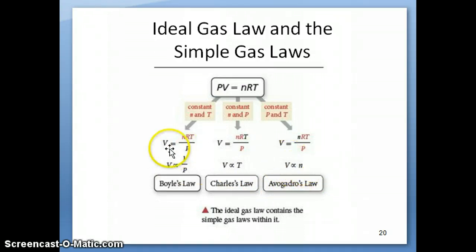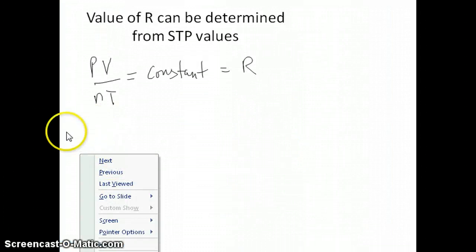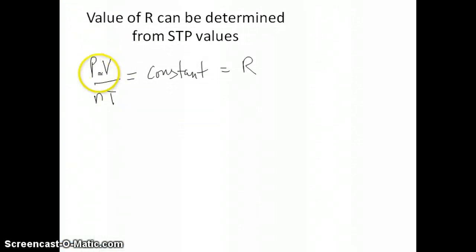If you put all of these things together, what you find is that you get an equation that looks like this, where PV over nT is equal to a constant. So remember that P and V are inversely proportional, and P and T are directly proportional. So if P goes up, T goes up. V and T are also directly proportional. And V and N are also directly proportional. So when you combine all of these things together, PV over nT has to be equal to a constant.